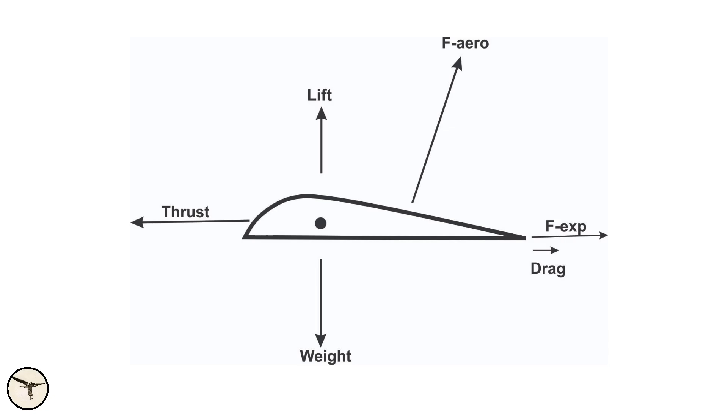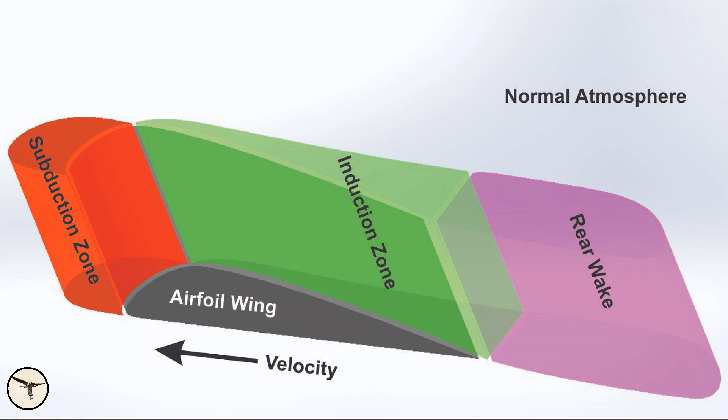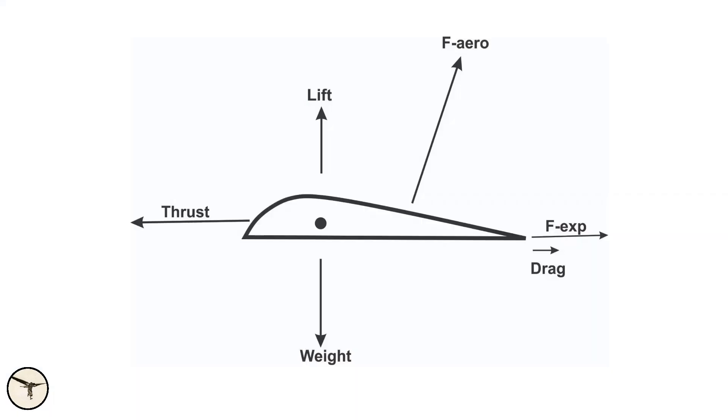The zone theory of lift is based on the idea that lift is the result of a suction force, F-aero, which acts perpendicular to the upper surface of the airfoil, called the inductor. The area over the inductor is called the induction zone. The vertical vector of F-aero is lift, and the horizontal vector is expansion force, F-exp. This expansion force is controlled by thrust from the engines, and causes expansion of the air in the induction zone.